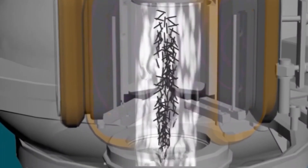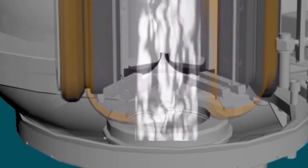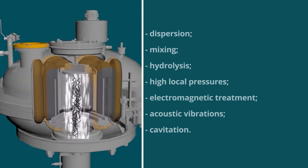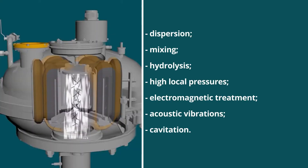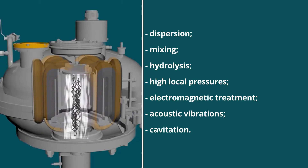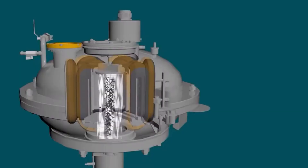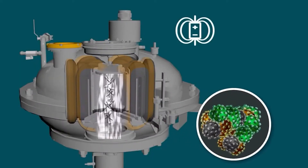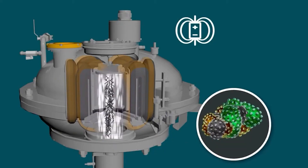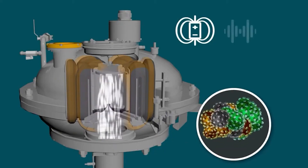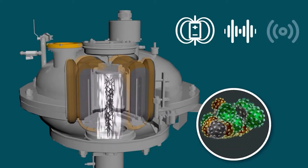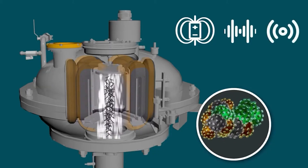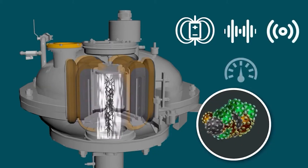During operation, an inductor creates a rotating electromagnetic field that activates ferromagnetic particles in the processed raw material, which begin to move through the operating chamber. The process involves dispersion, mixing, hydrolysis, high local pressures, electromagnetic treatment, acoustic vibrations, and cavitation. Owing to this combination of processes, chemical reactions are accelerated and proceed more completely compared to those in other reactors.